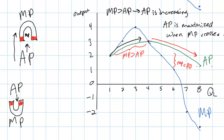One example I use in my own classes is to have students think about their test scores. If a student is averaging 80% on tests and on the last test they earned a 90%, their average would be pulled up by the higher score. On the other hand, if you were averaging 80% and on your last test you got a 70%, your average would be pulled down. If the additional worker produces more than the average worker, the average output will increase; if the last worker produced less, the average will decrease.